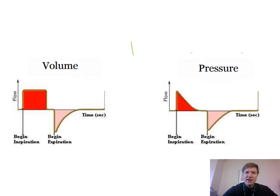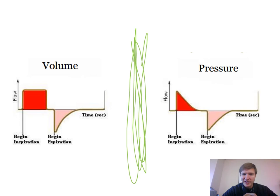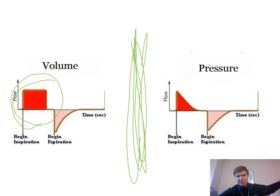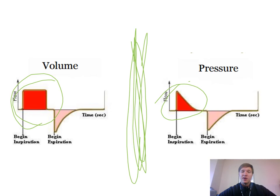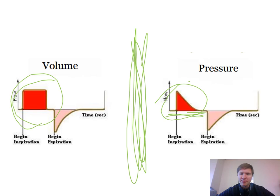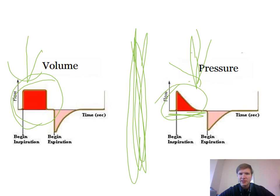Comparing square waveform versus decelerating ramp: in volume ventilation with a square waveform, flow is constant — for example, a constant 60 liters per minute throughout. In pressure control, it looks like a decelerating ramp. You set a pressure and it delivers and holds it for the inspiratory time; the patient can pull more flow if needed. Inspiration is above the line and exhalation is below. Peak expiratory flow rate is shown by how far down the exhalation portion goes — further down means faster exhalation.